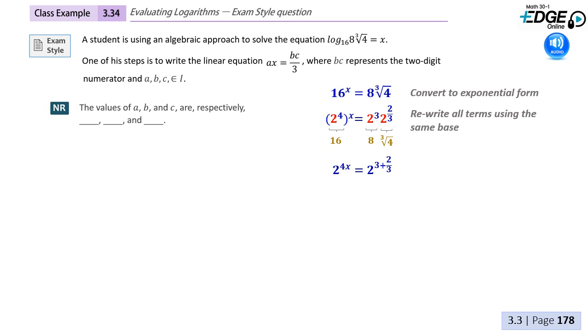Next, note that whenever we have a question with a radical sign in the logs unit, we want to change that to a rational exponent. So instead of the cube root of 4, we have 4 to the 1 third. Since 4 is 2 squared, it becomes 2 to the 2 thirds.